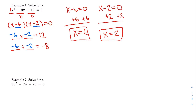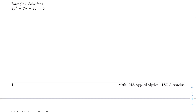Now let's move to example two. Solve for y, given 3y squared plus 7y minus 20 equals zero. Note that x and y are arbitrary — I could use any letter. The key difference here is that the coefficient of my first term is 3, not 1, so this is not a 'simple' quadratic. Fortunately, since 3 can only be written as 3 times 1, I know the factored form starts with 3y and y.